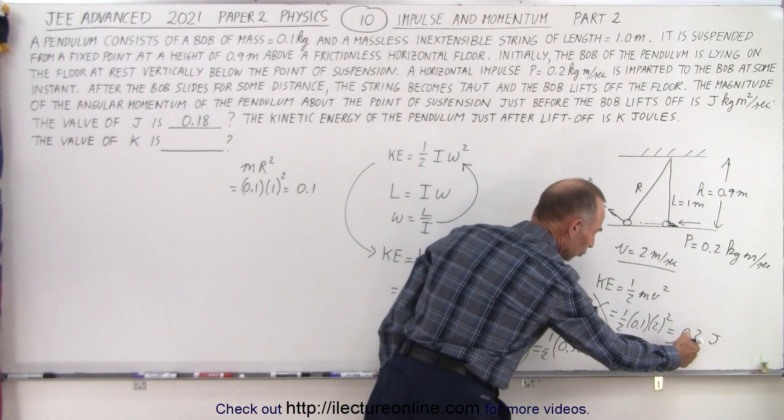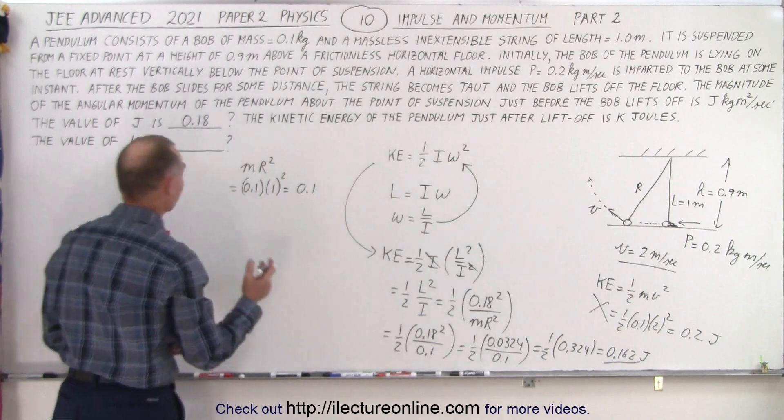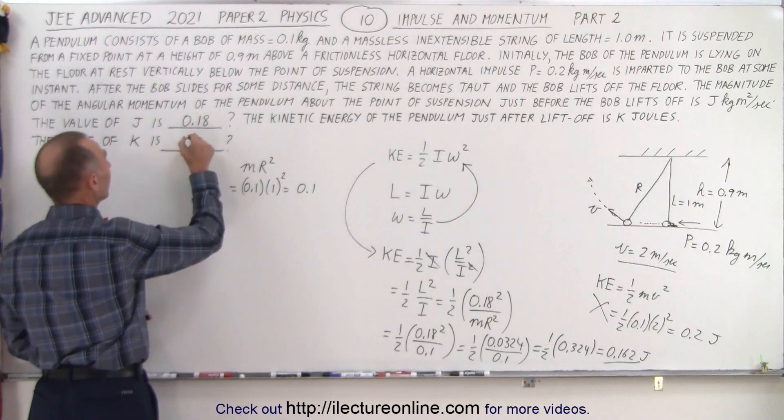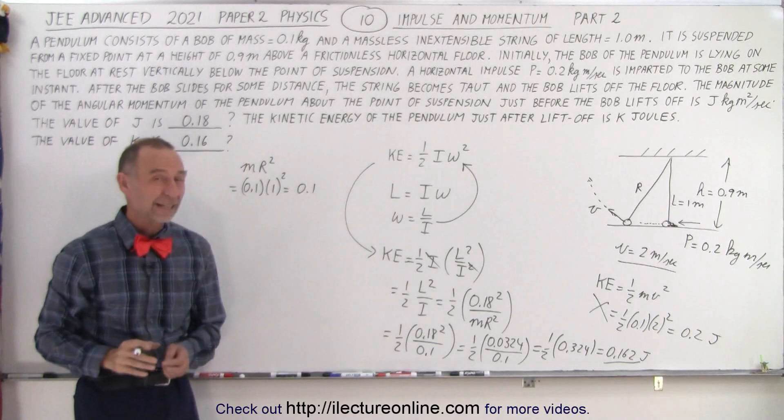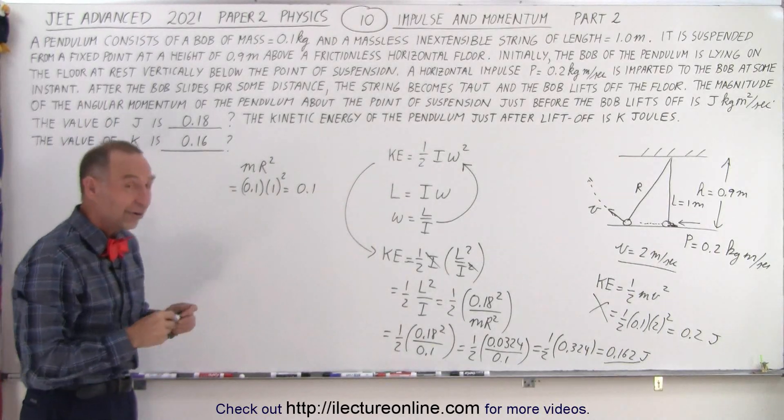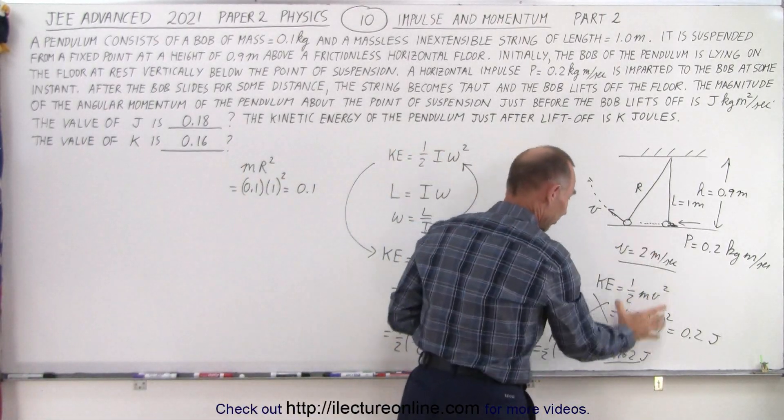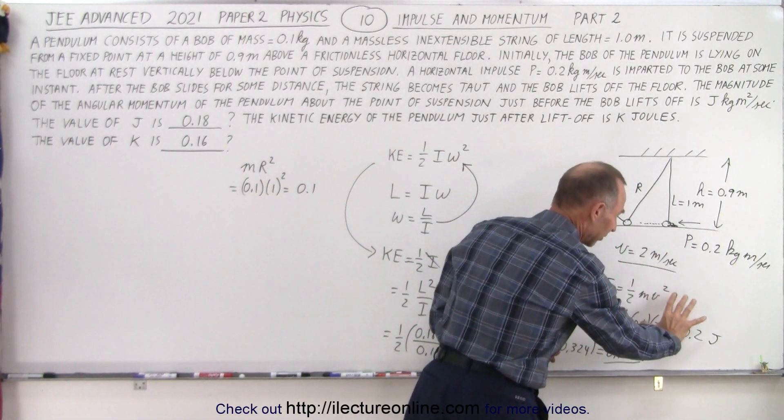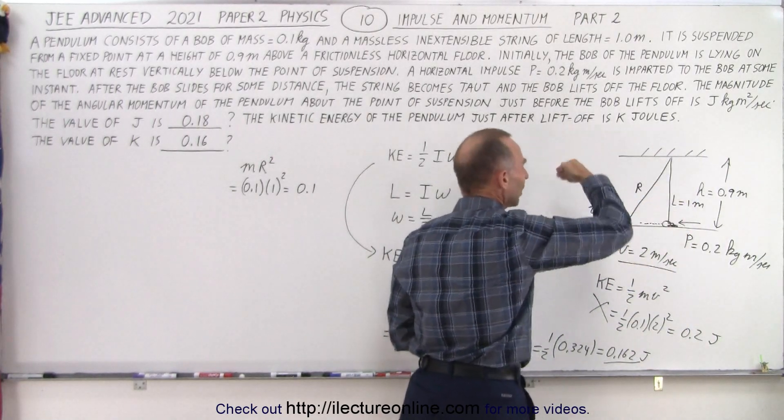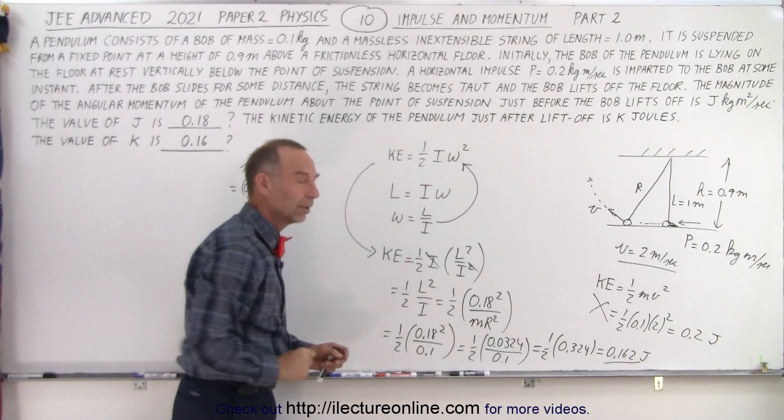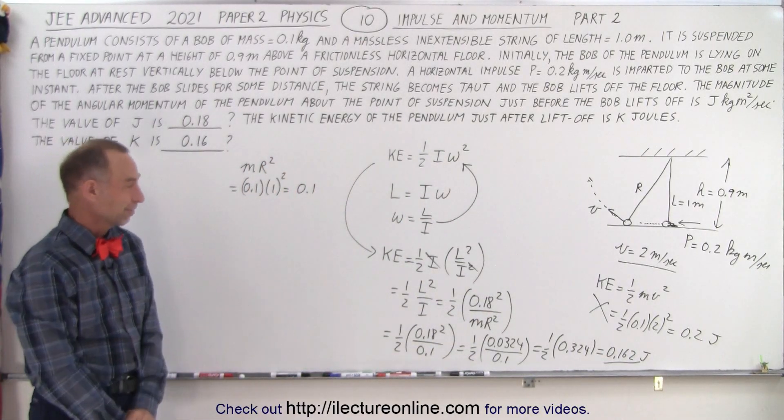It's not equal to 0.2 joules, it's equal to 0.162 joules. And since I only want the first two decimal places, we write 0.16 joules as the answer for kinetic energy. So it is very easy here to make the mistake, to think I know what the velocity is, so it's simply 1/2 mv squared, but that's not the correct answer. Some energy is lost as the string becomes taut and begins to swing around, and therefore the kinetic energy is only 0.162 joules. And that is how it's done.